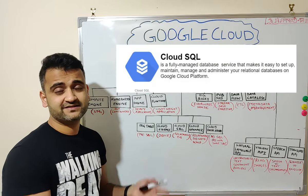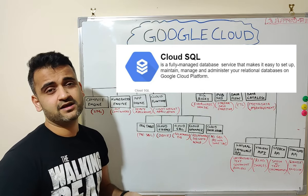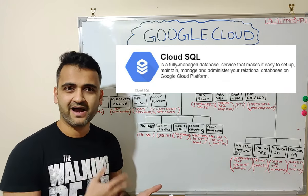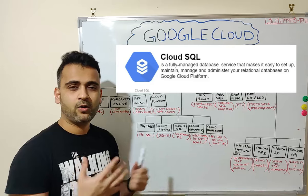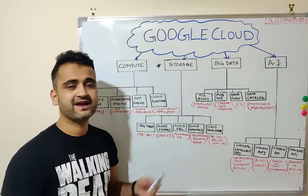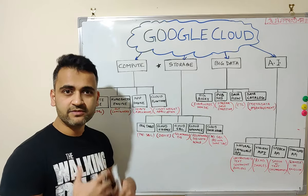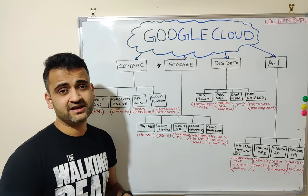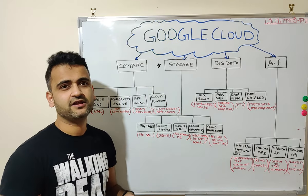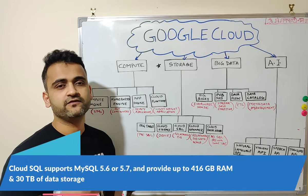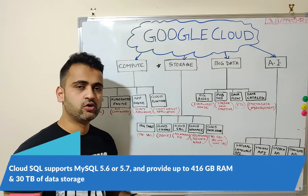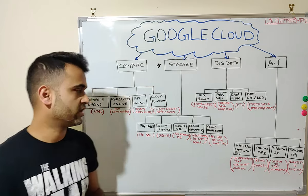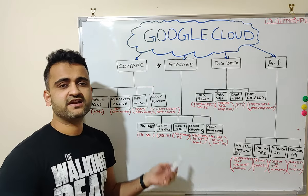Cloud SQL is a relational database product that can be easily correlated with day-to-day relational databases like Oracle and MySQL. All relational database needs can be fulfilled by Cloud SQL. It does have some limitations in how much data it can process since it is based on MySQL, but it is very efficient if your data needs are not huge and you want to run relational database workloads and analysis.